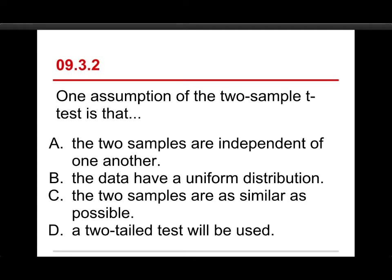Number two. One assumption of the two-sample t-test is that A, the two samples are independent of one another, or B, the data have a uniform distribution, or C, the two samples are as similar as possible, or D, a two-tailed test will be used.